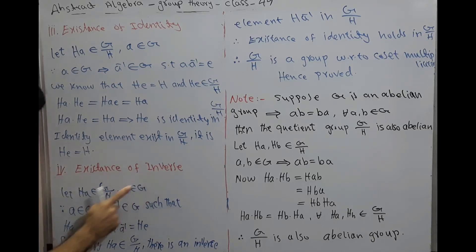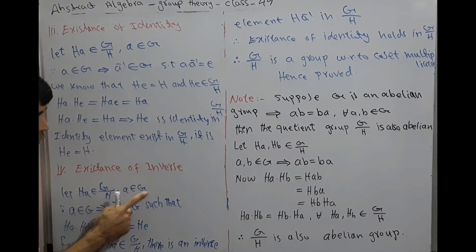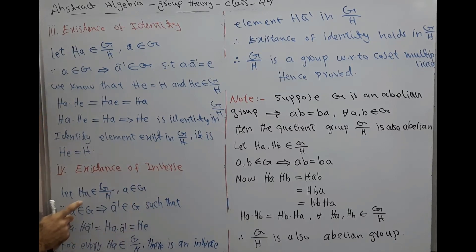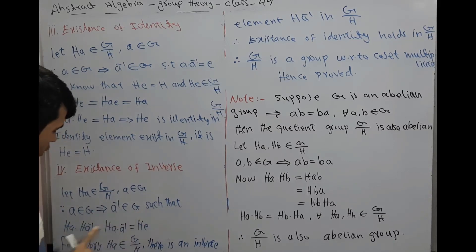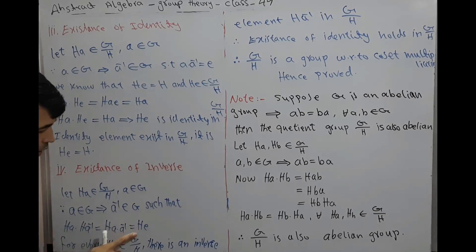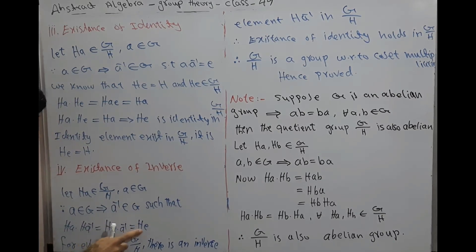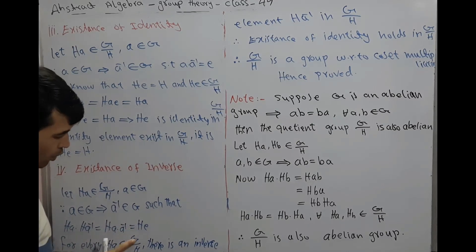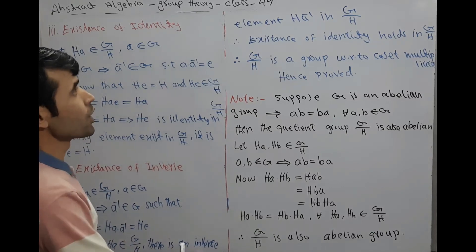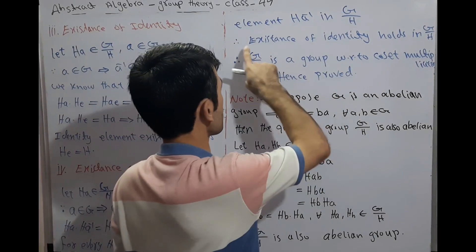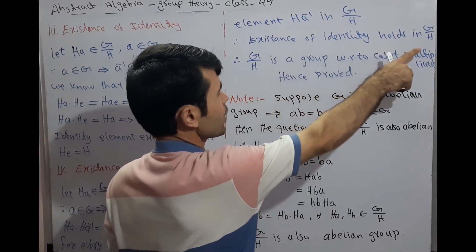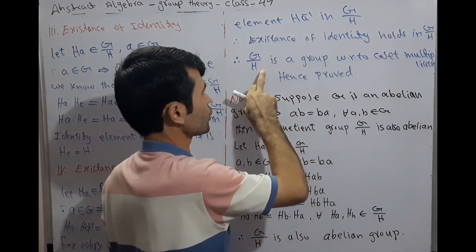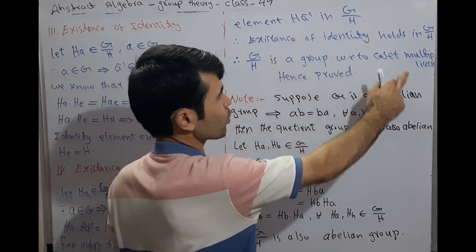Fourth, existence of inverse. Let HA belong to G by H, so A belongs to G. We find the inverse of HA. Since A belongs to G, A-inverse also belongs to G. So HA·H(A-inverse) = H(A·A-inverse) = HE. For every HA in G by H there is an inverse element H(A-inverse) in G by H. Therefore existence of inverse holds in G by H. Therefore G by H is a group with respect to coset multiplication. Hence the theorem is proved.